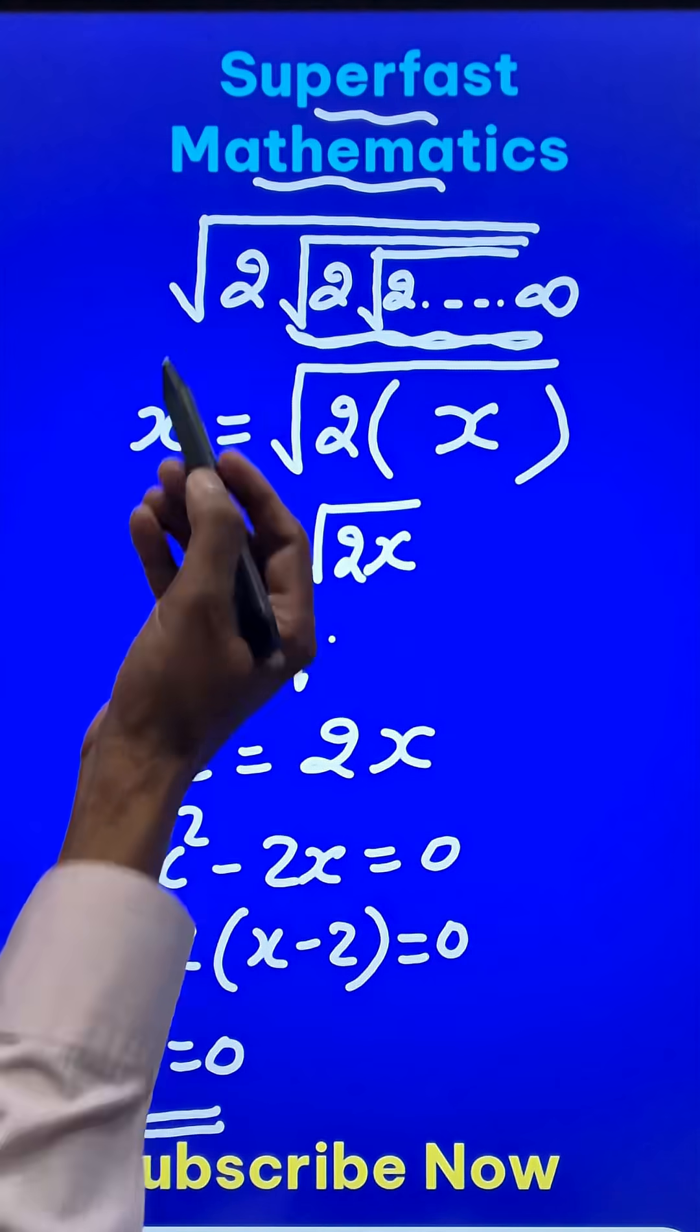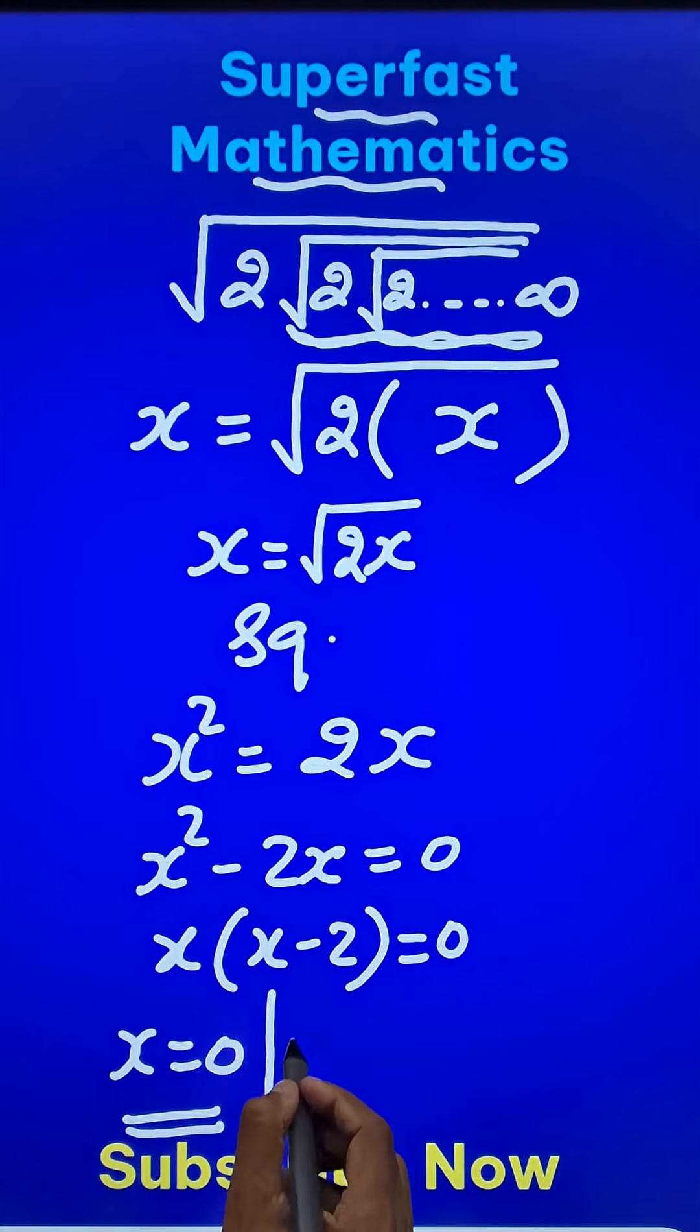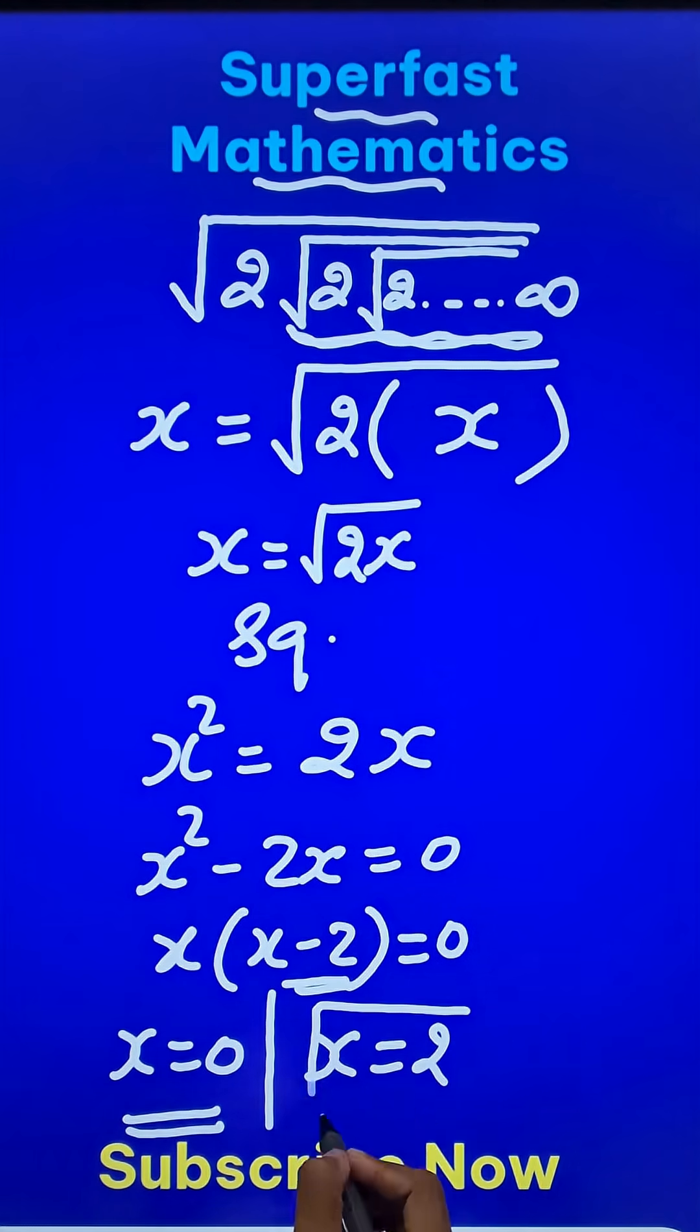And so x is 0, which is rejected because if x becomes 0 that means the entire expression becomes 0. And therefore x minus 2 equal to 0 gives me x equal to 2, and that means this expression has the answer 2.